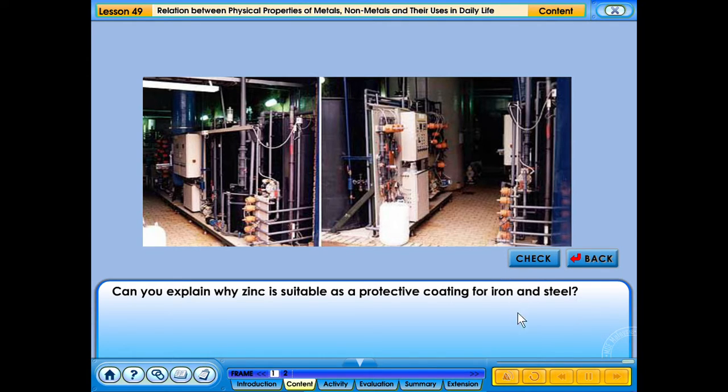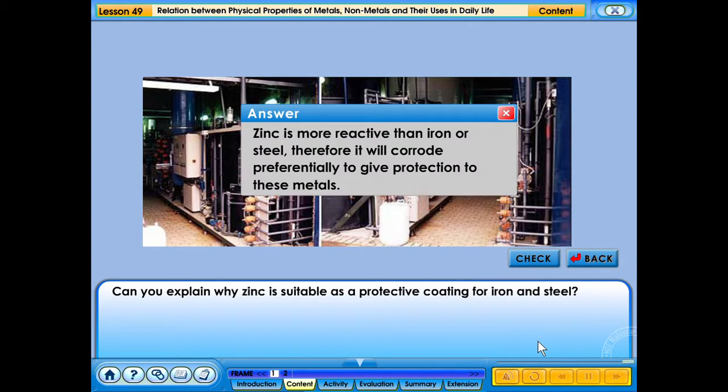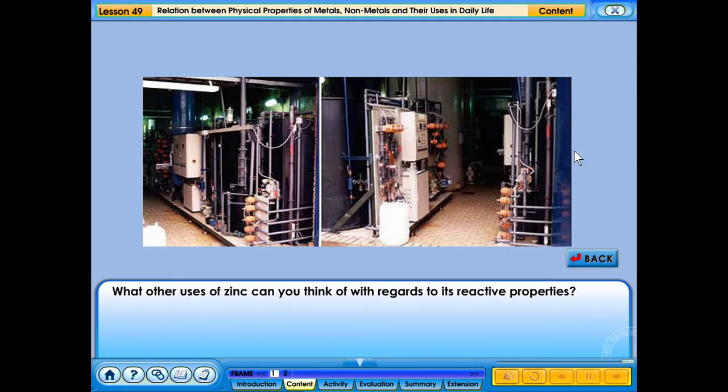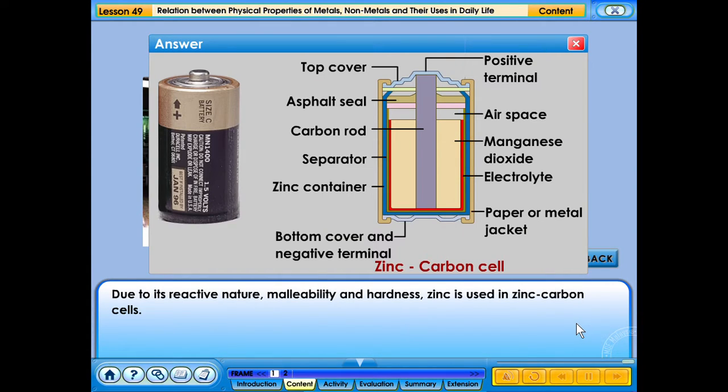Zinc is more reactive than iron or steel. Therefore, it will corrode preferentially to give protection to these metals. What other uses of zinc can you think of with regards to its reactive properties? Click the check button to find out. Due to its reactive nature, malleability and hardness, zinc is used in zinc carbon cells.